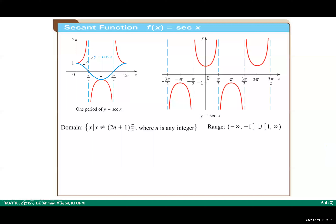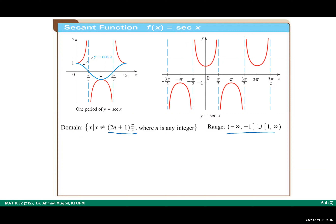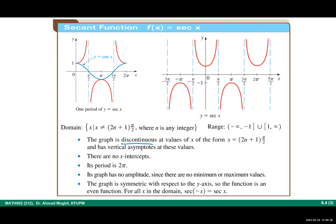To summarize secant: the domain is all real numbers except the zeros of cosine. The range is (−∞, −1] ∪ [1, ∞). The graph is symmetric about the y-axis because secant is an even function. It is discontinuous at the odd multiples of π/2, where we have vertical asymptotes. There are no x-intercepts because one over cosine can never equal zero. The period is 2π.